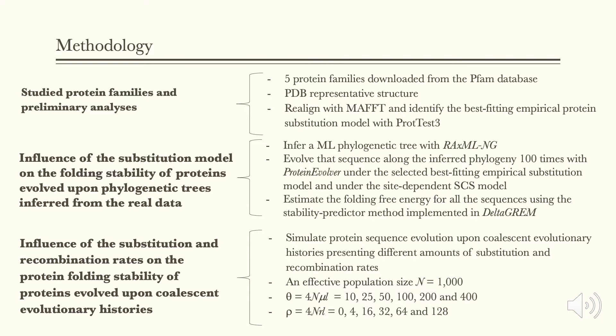In the third stage, we simulated the protein sequences evolution upon coalescent evolutionary histories, with six different amounts of substitution and recombination rates, using an empirical substitution model. The SCS model couldn't be applied. For the last two stages, the estimation of the free energy of the simulated protein sequences was performed with delta-gira.